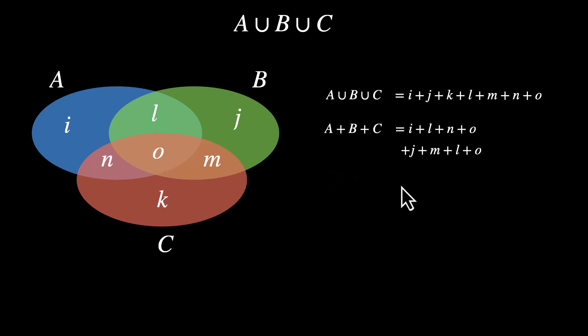Similarly, B is J plus M plus L plus O. These four regions. And C, that's these four regions. That's K plus M plus N plus O. We wanted seven of them. We have 12. So we definitely have some overlap. What do we have?